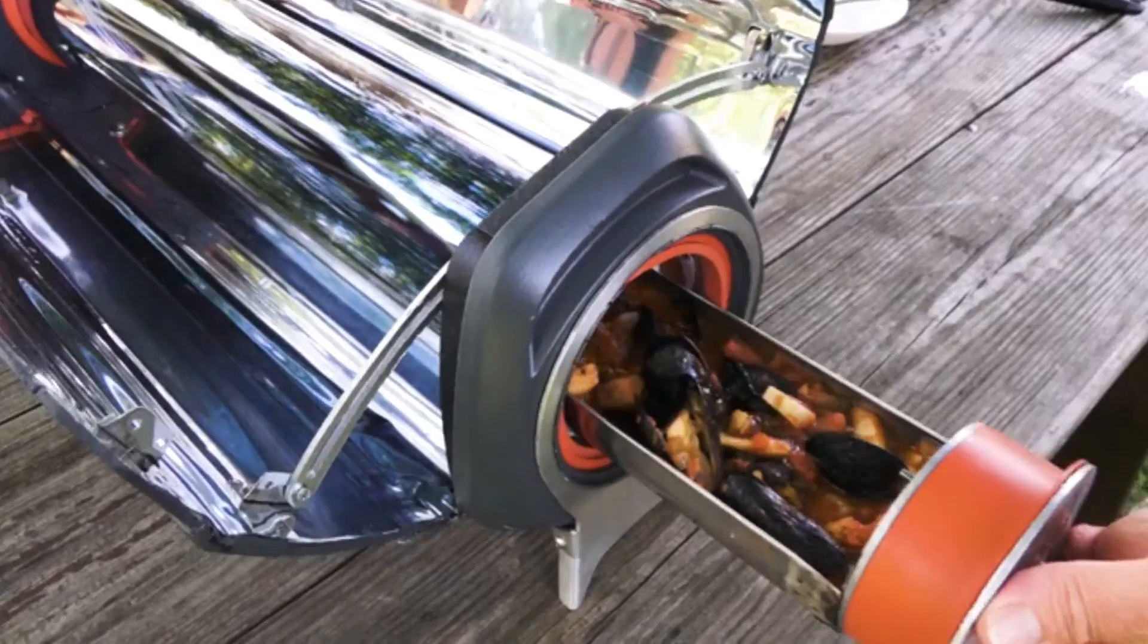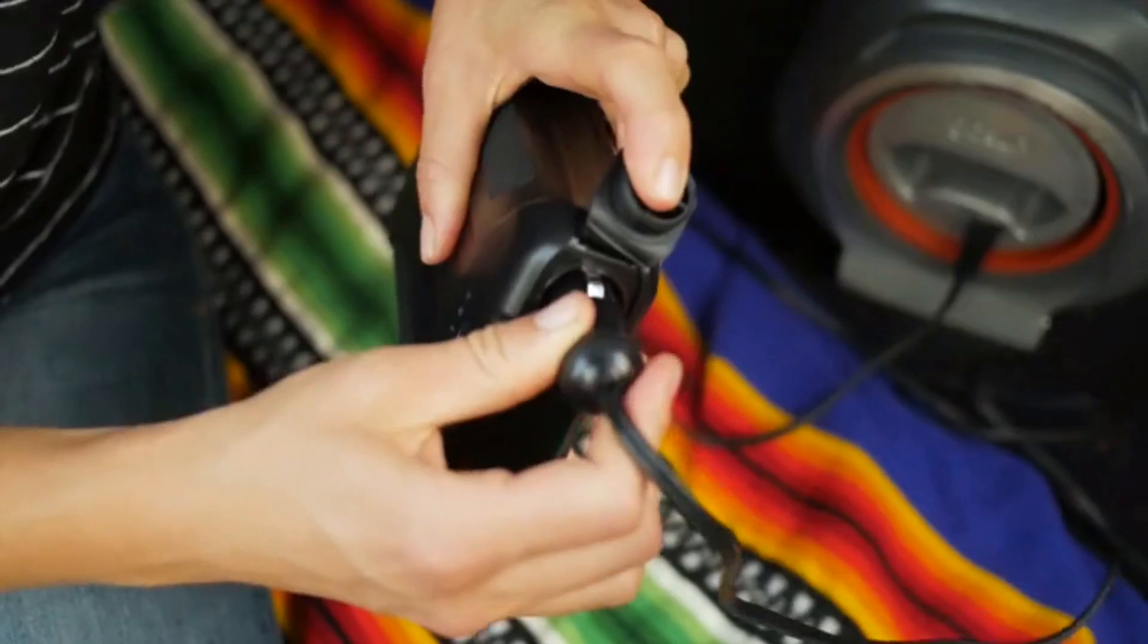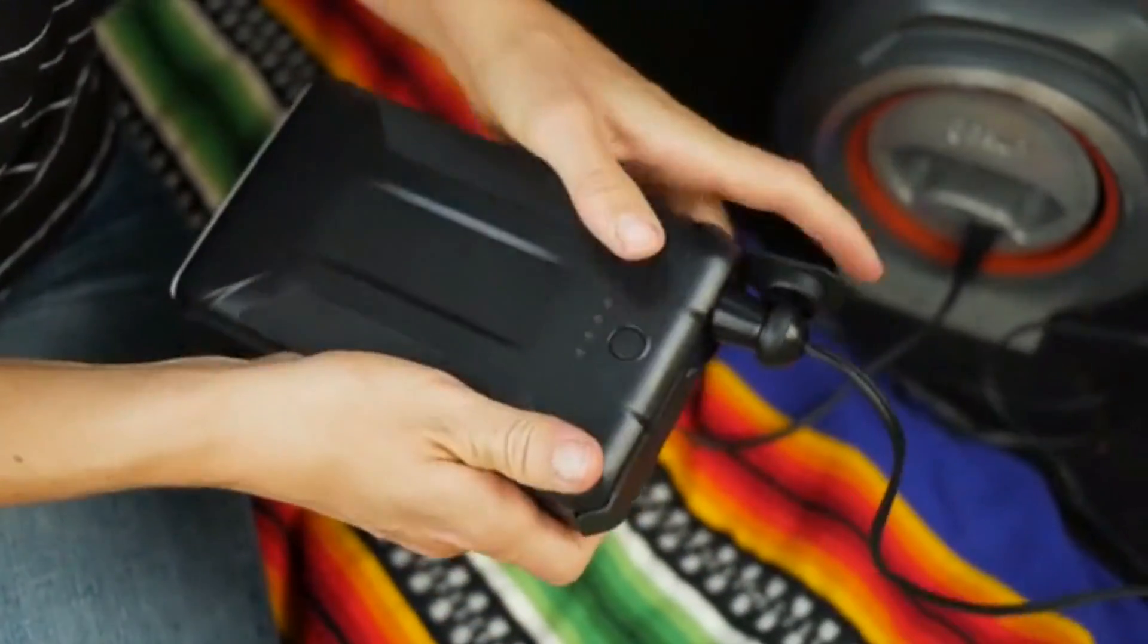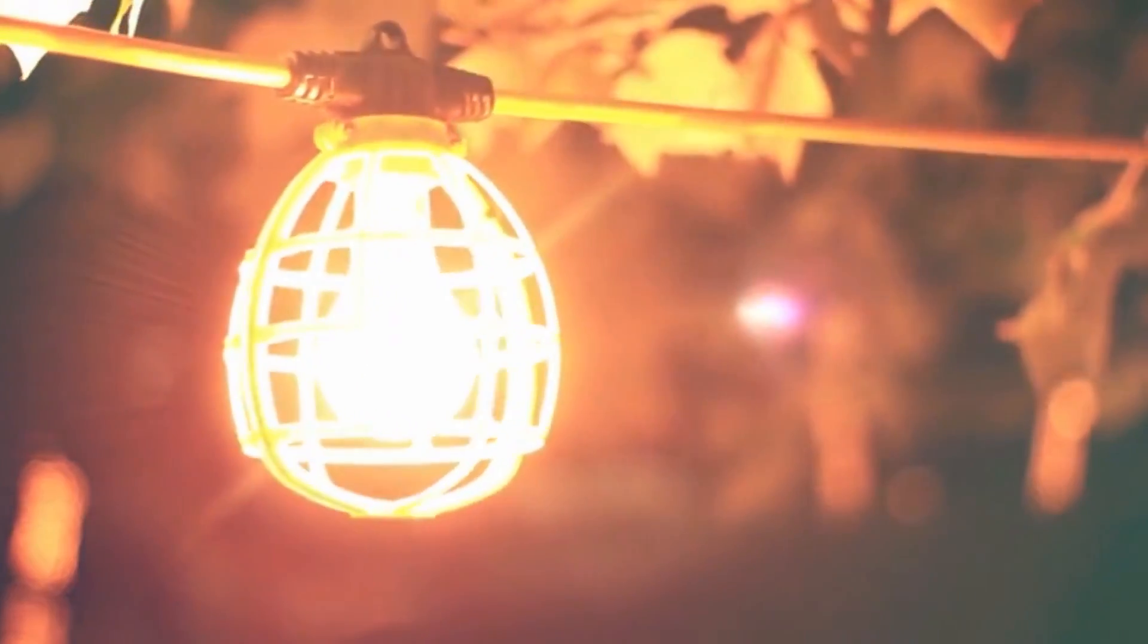The GoSun Fusion can bake, boil, or fry many dishes in as little as 20 minutes. Or cook anytime with its patented, high-efficiency electric heating element, using the same amount of energy as this light bulb.